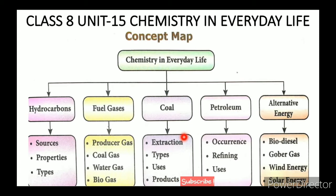In underground mining, you can see the types of coal, which are classified by carbon content and heat produced. There are four types of coal: lignite, sub-bituminous, bituminous, and anthracite.